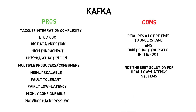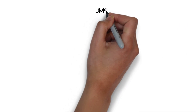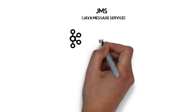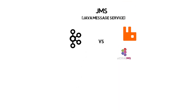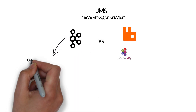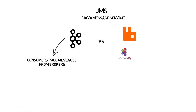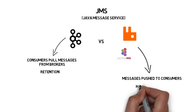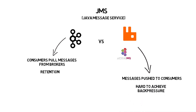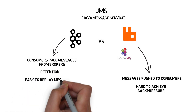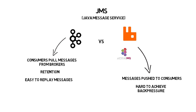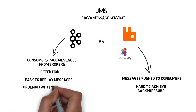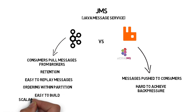A lot of things in Kafka were purposely named to resemble a JMS-like messaging system. This makes people wonder about the actual differences between Kafka and standard JMS systems like RabbitMQ or ActiveMQ. The main difference is that Kafka consumers pull messages from the brokers, which allows for buffering messages for as long as the retention period holds. In most other JMS systems, messages are pushed to the consumers instead, which makes back-pressure really hard to achieve. Kafka also makes replaying of events easy, as messages are stored on disk. Additionally, Kafka guarantees ordering within one partition and provides an easy way to build scalable and fault-tolerant systems.